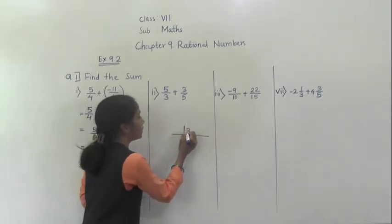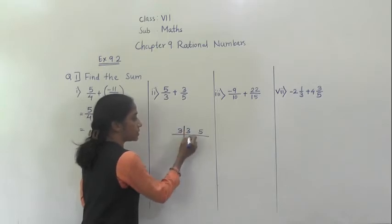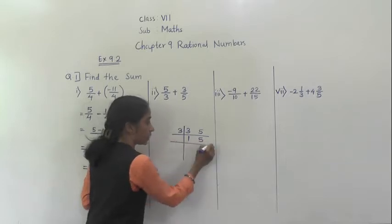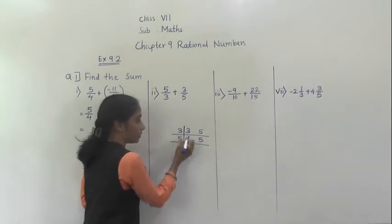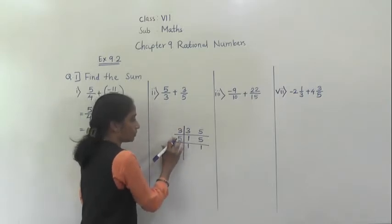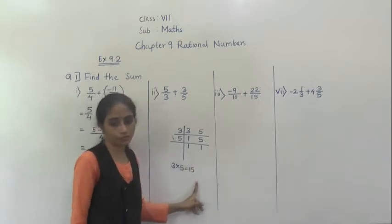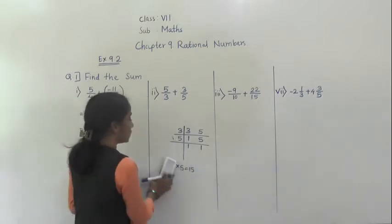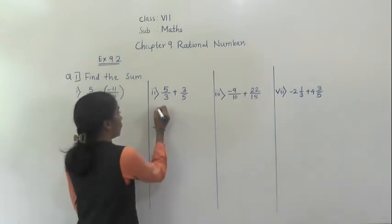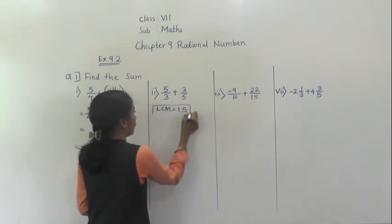Here I will show you how to find the LCM of 3 and 5. 3 is divisible by 3, so 3 ones are 3. 5 is not divisible by 3, so write 5 as it is. Then take 5. 5 ones are 5. So LCM is 3 into 5, which is 15. LCM is equal to 15.